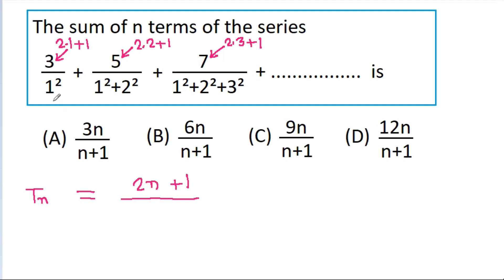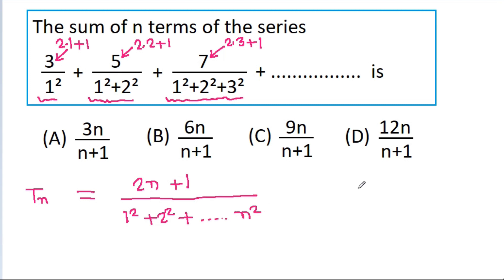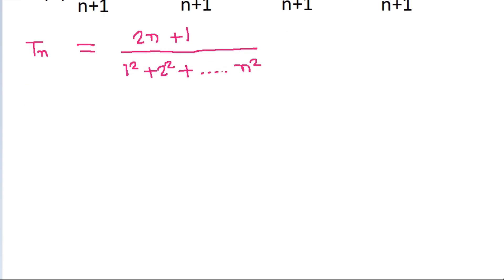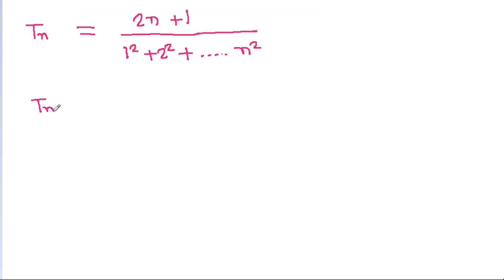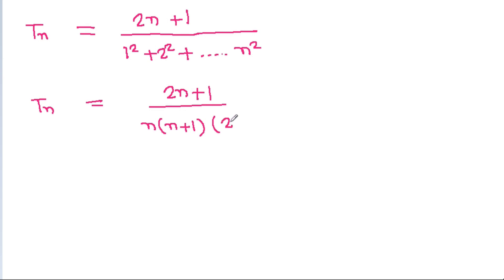In the denominator, the first term has 1 square, the second term has 1 square plus 2 square, and the third term has 1 square plus 2 square plus 3 square. So the nth term denominator will be 1 square plus 2 square up to n square. This is tn equal to (2n+1) divided by the sum of squares of natural numbers, which is n times (n+1) times (2n+1) divided by 6.